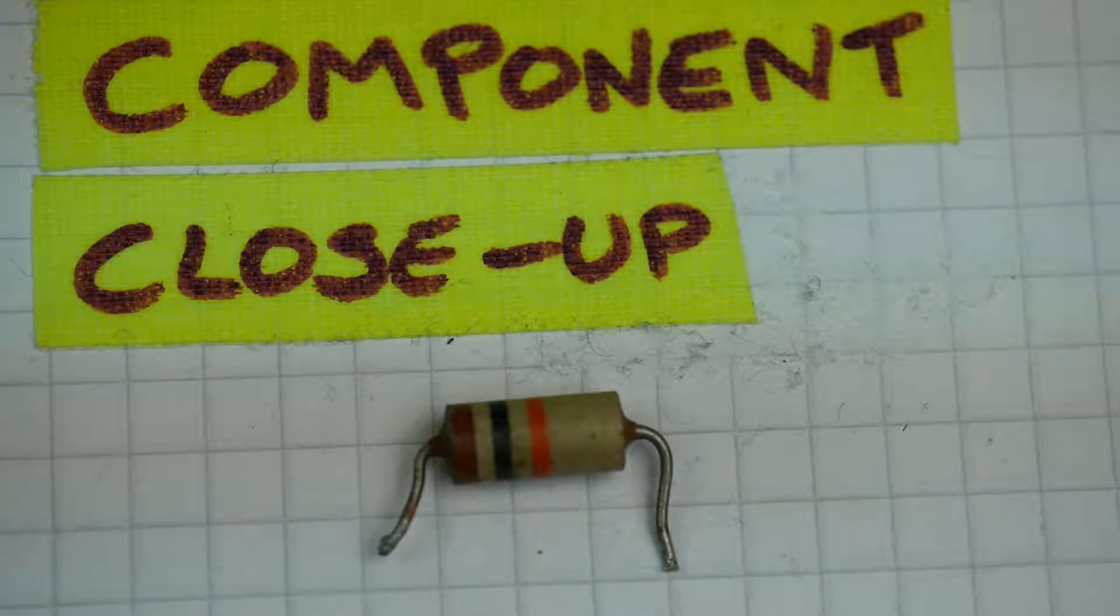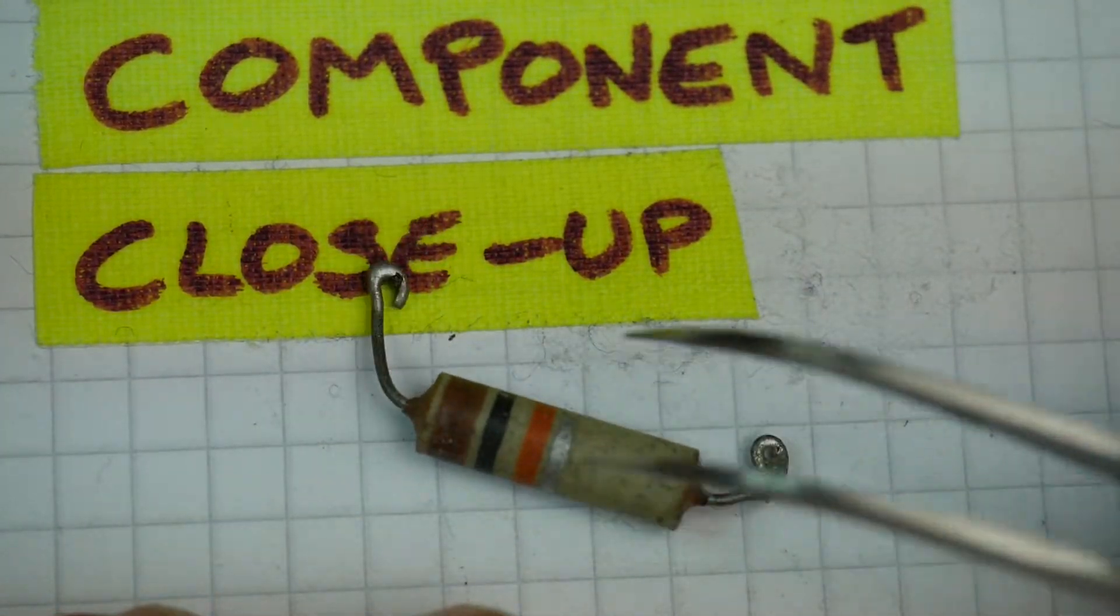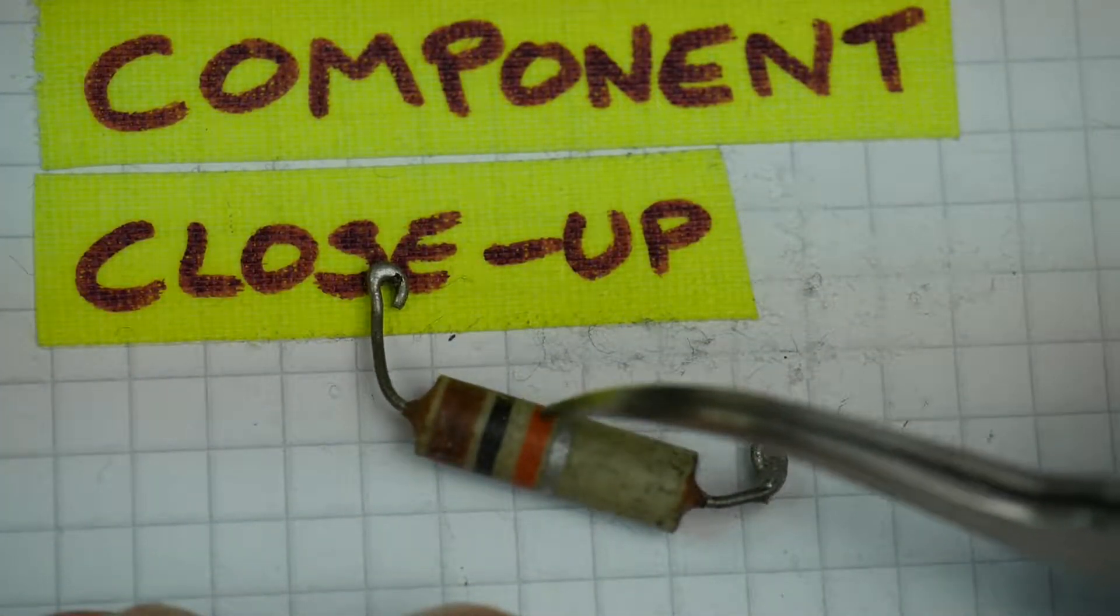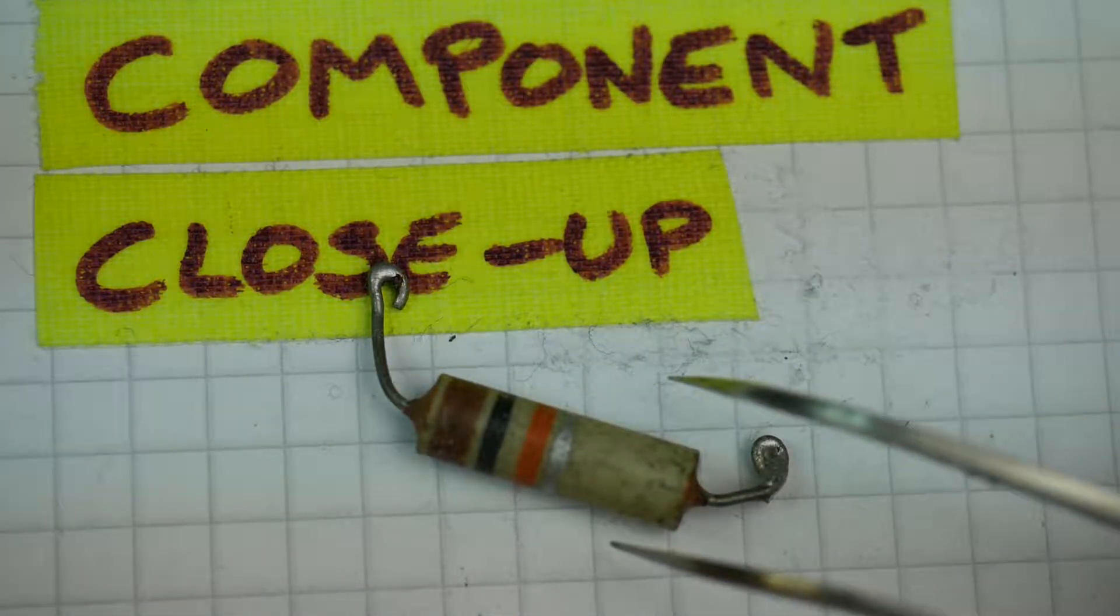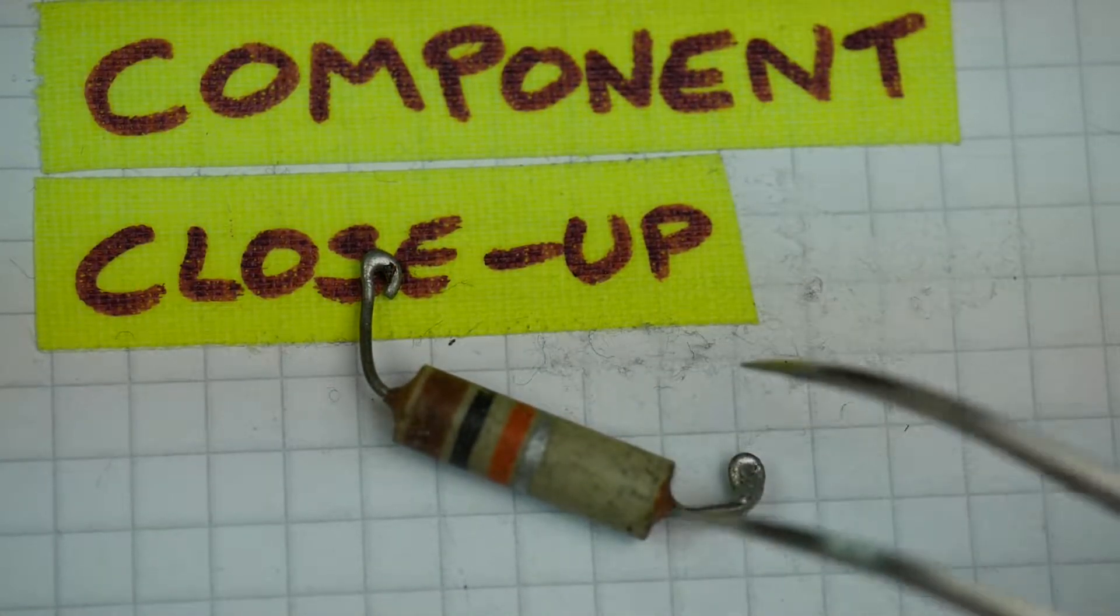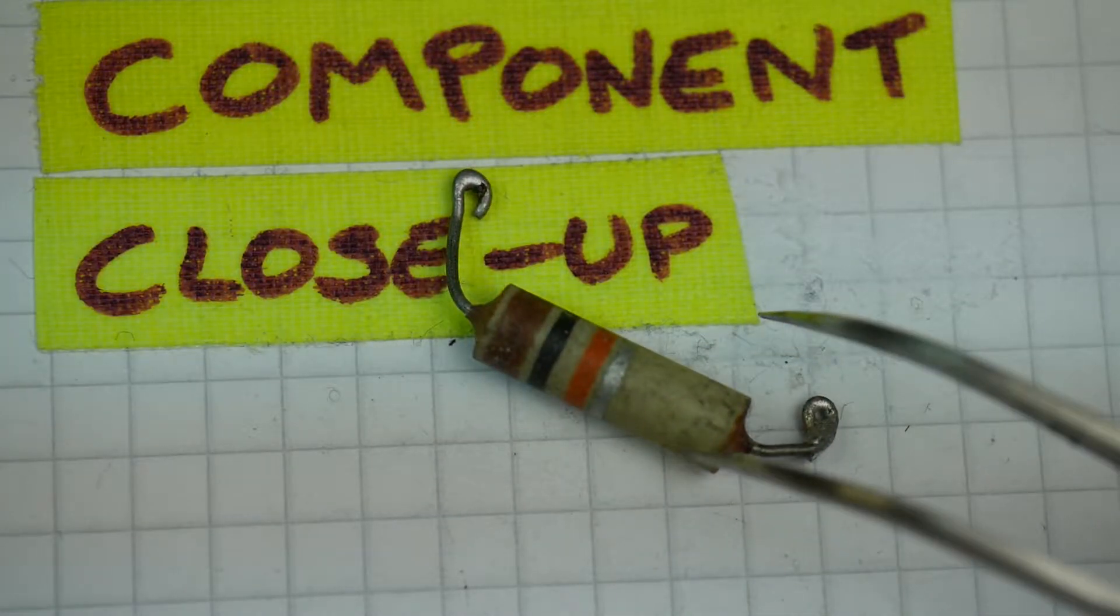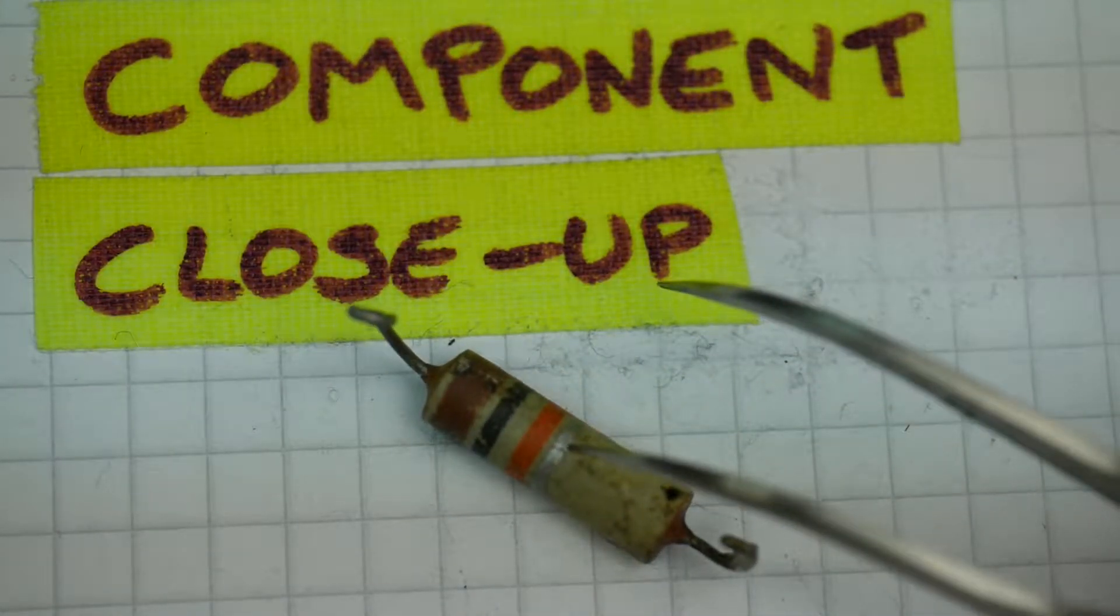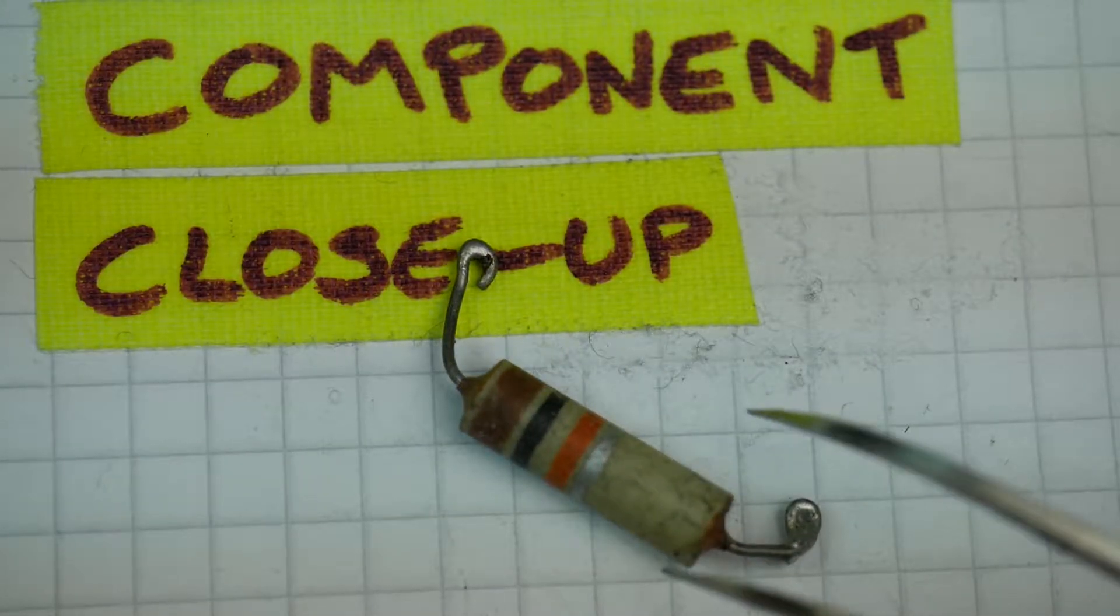The cheaper resistor. We can do the same thing with the same resistance value. Brown, black, orange. And then silver. And that indicates its 10% tolerance. So you pay a bit more for that. They're simply selected out of the manufacturing batch. So the closer to the correct value they are, the more precise the tolerance marking will be.